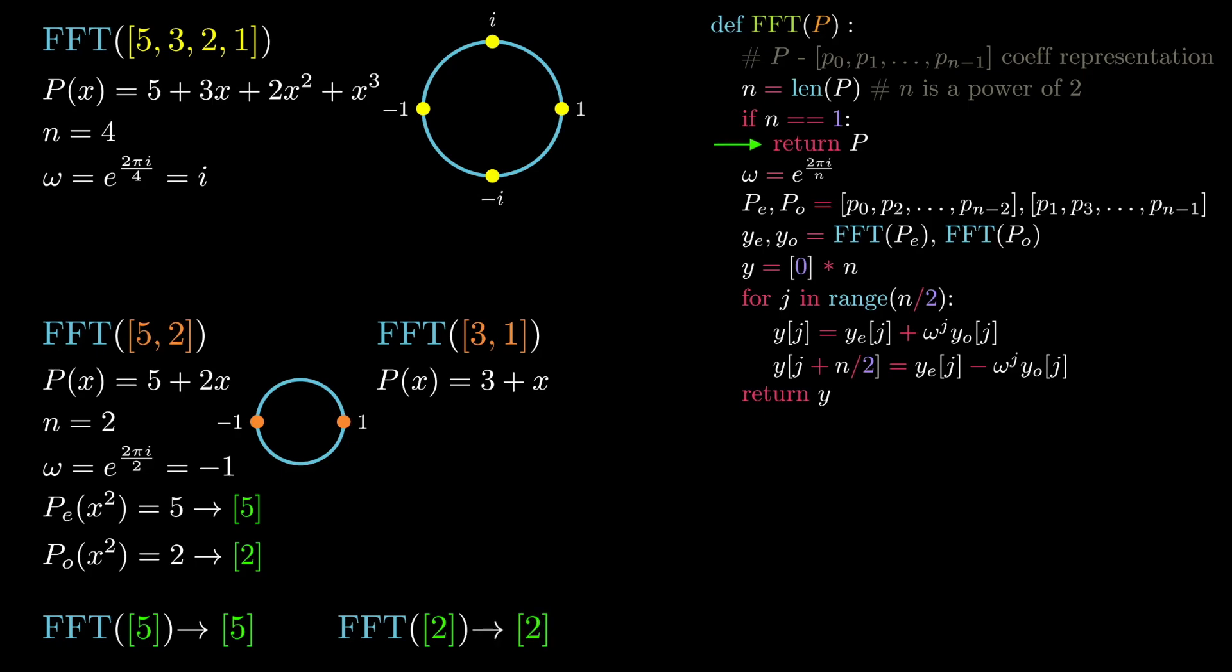The outputs of these recursive calls are then assigned to the variables ye and yo. We can now proceed to define our output y for this call, which is initially a two-element list of zeros. We proceed into our for loop.